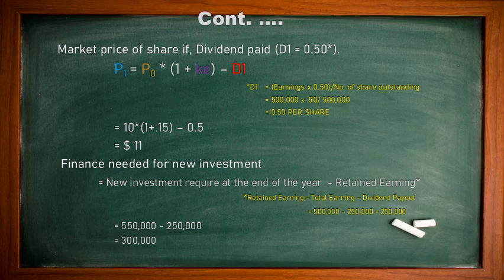Market value of the share if dividend is paid. As the question informs us, dividend paid is 50% of earnings. We use the same formula P1 = P0 × (1 + k) − D1. We need to calculate the actual D1 value: earnings × 50% divided by number of outstanding shares. Earnings are $500,000, 50% is paid, number of shares is 500,000. So each share receives a dividend of $0.50.